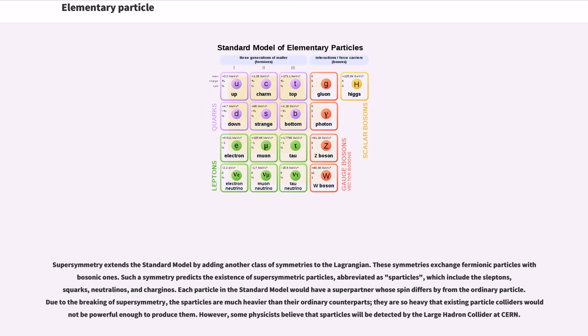Each particle in the standard model would have a superpartner whose spin differs by 1/2 from the ordinary particle. Due to the breaking of supersymmetry, the sparticles are much heavier than their ordinary counterparts. They are so heavy that existing particle colliders would not be powerful enough to produce them. However, some physicists believe that sparticles will be detected by the Large Hadron Collider at CERN.